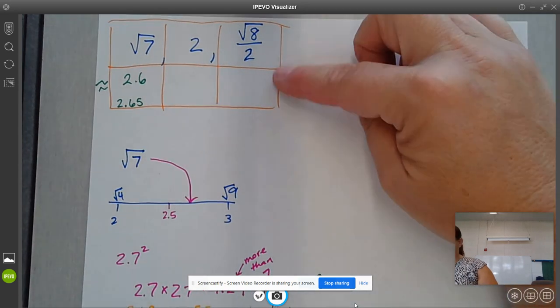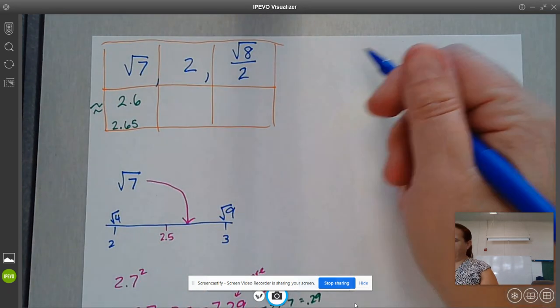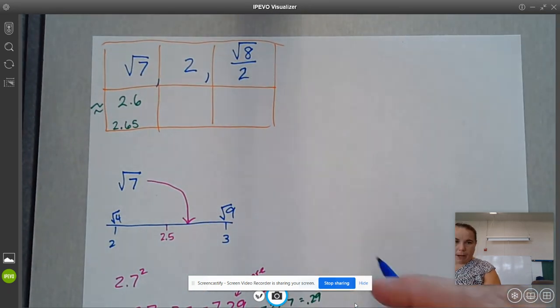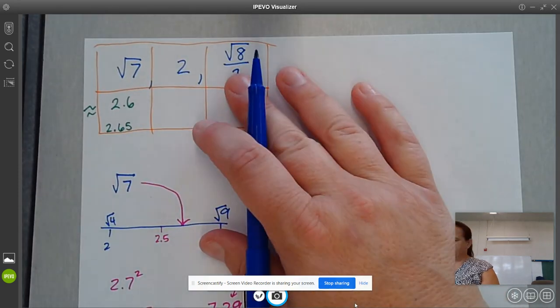Now this actually is helpful, what we just did, because now we have square root of 8 over 2. I'm going to use some of this information to help with this next expression.